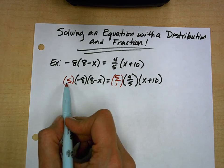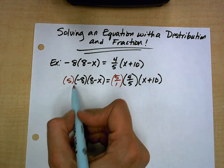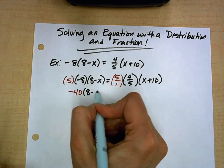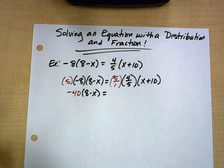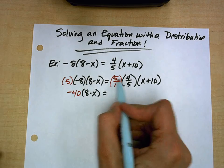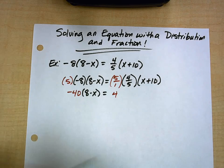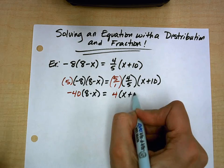And to simplify things, I'm just going to multiply left to right. So this is negative 40, and I still have to multiply by my 8 minus x, but that's going to be a distribution now. Here I'm going to have 20 over 5, which is 4. And I still have to multiply by my x plus 10.